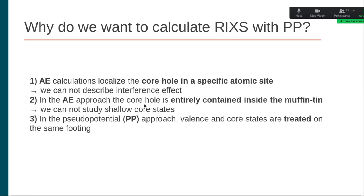This is, for example, the case of the L2-3 edge in aluminum, which corresponds to excitations from the 2p states to the conduction band. An interesting point is that we could treat a valence core state on the same footing by setting up a pseudopotential that doesn't contain those shallow core states inside, so we would be calculating them with plane waves. We can therefore treat these shallow core states and the valence states both with plane waves.